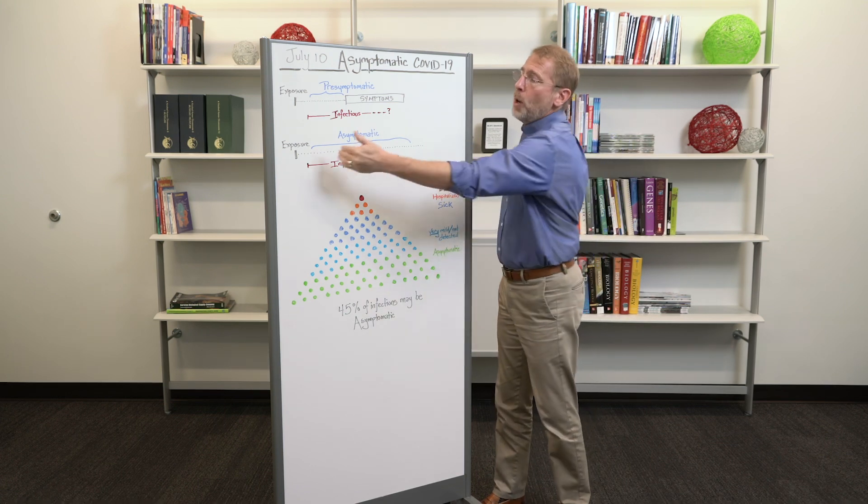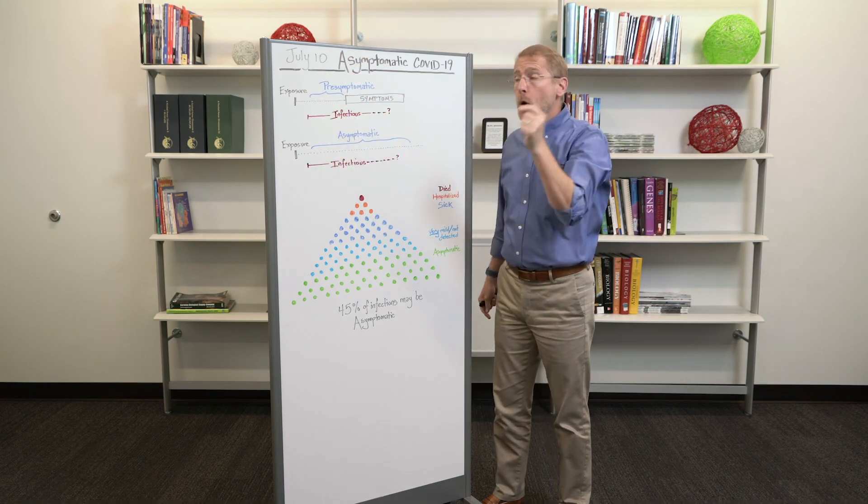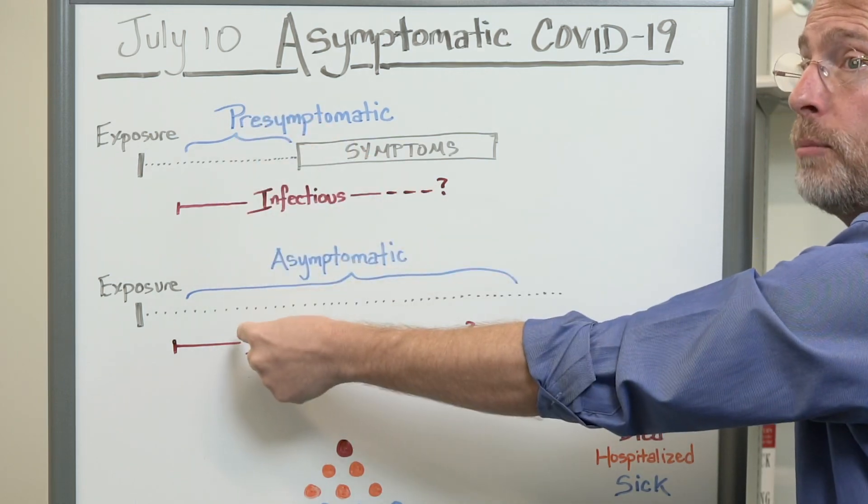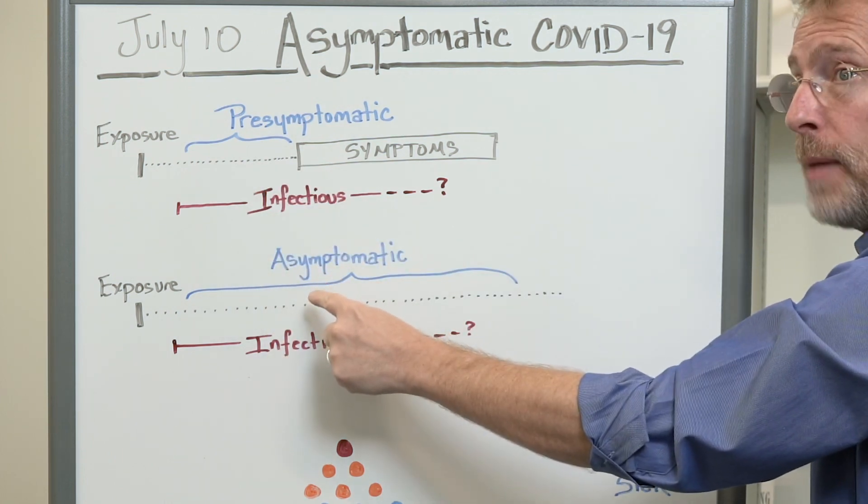Here's a tricky part. If I tested both these individuals at say day five, at that moment they would both test positive and neither one of them would have symptoms. But this person is truly pre-symptomatic and this person is asymptomatic.